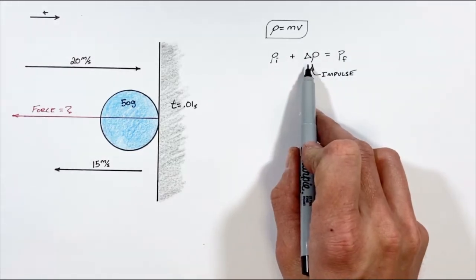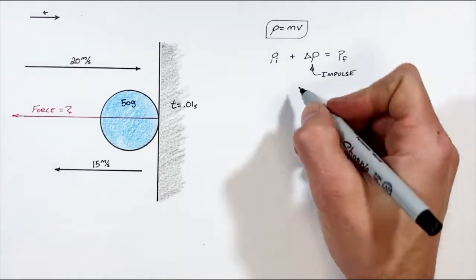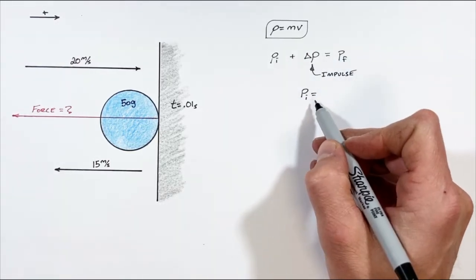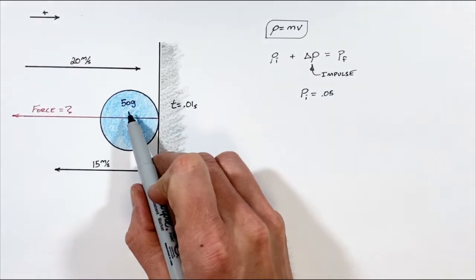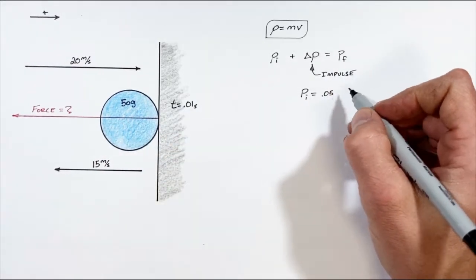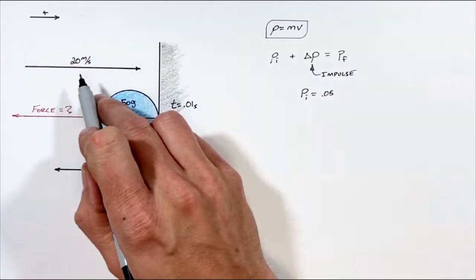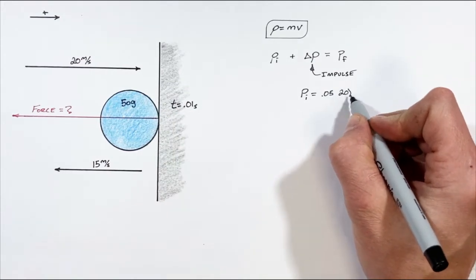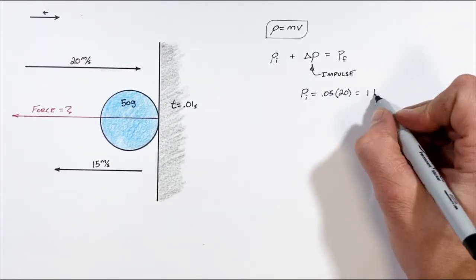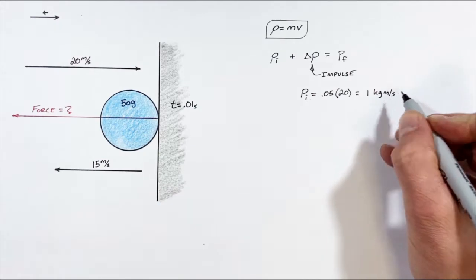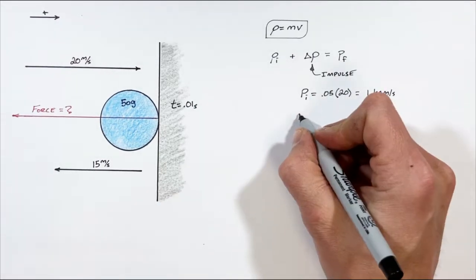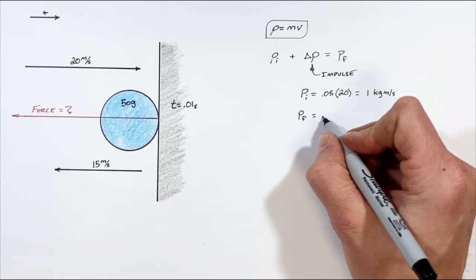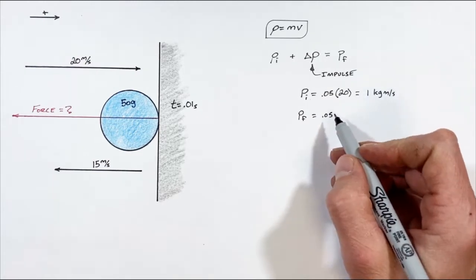To solve for the change in momentum, we need to work out these other two terms. Our initial momentum is given by 0.05 kilograms (the mass of the ball) multiplied by the initial velocity of 20 meters per second, which gives us one kilogram-meter per second of initial momentum.